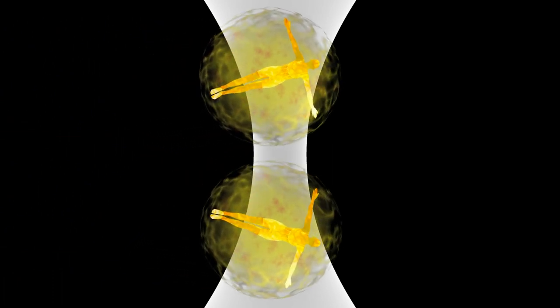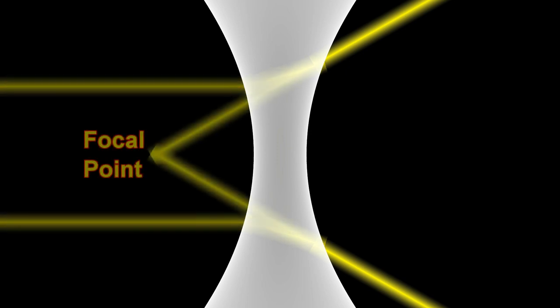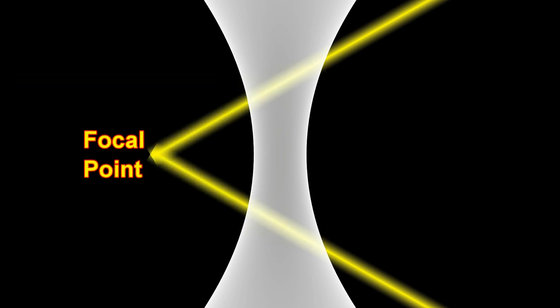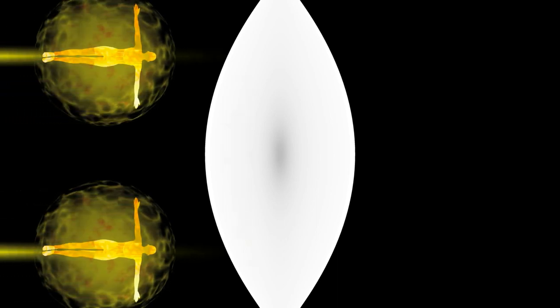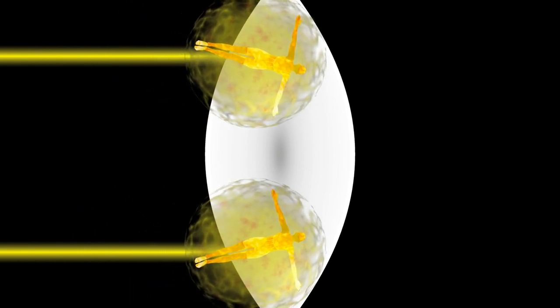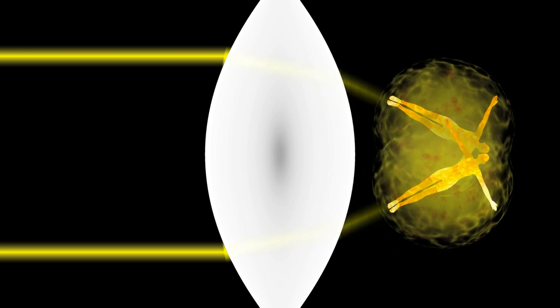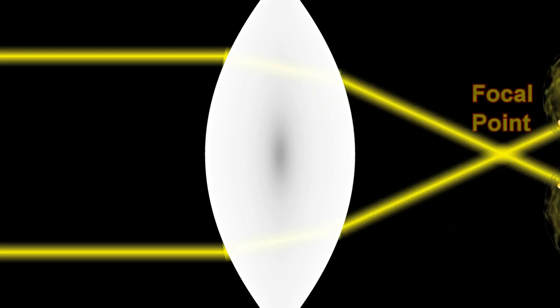Parallel beams of light passing through this lens will exit moving away from each other. If we trace their paths backwards as straight lines, then the location where these lines meet is what we call this lens's focal point. Parallel beams of light passing through this other type of lens will exit moving towards each other. In this case, we call the focal point the place where their paths meet.